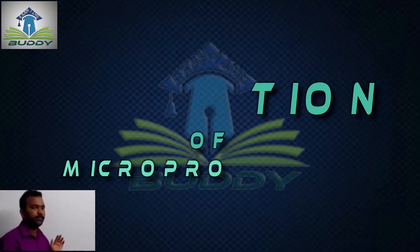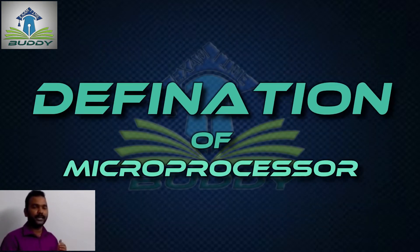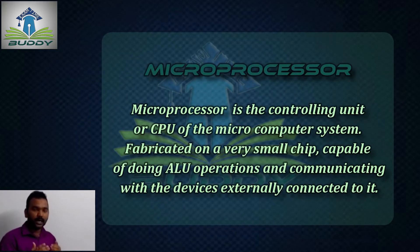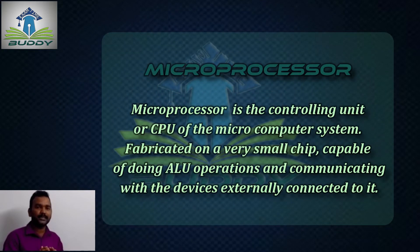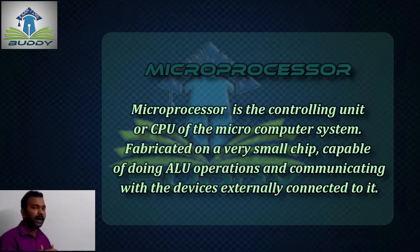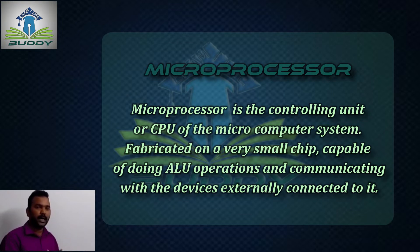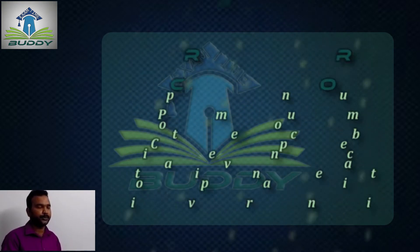Now we will move on to the definition of the microprocessor. What is a microprocessor? Microprocessor is the controlling unit or CPU of the microcomputer system, fabricated on a very small chip, capable of doing ALU operations and communicating with the devices that are externally connected to it.